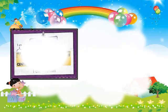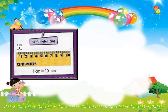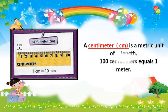Centimeter, cm. A centimeter is a metric unit of length. One hundred centimeters equals one meter.